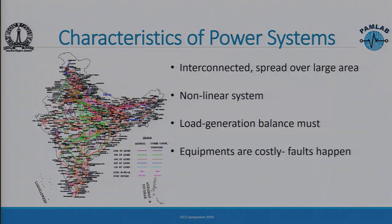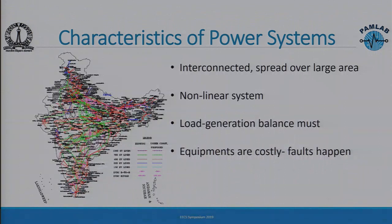This is a huge interconnected system spread over a large area. One interesting fact about this system is if any disturbance happens in any part of the network, it propagates at the speed of light — so if something is happening in Mizoram or Meghalaya it can impact Bangalore within the blink of an eye. This is a non-linear complex network.